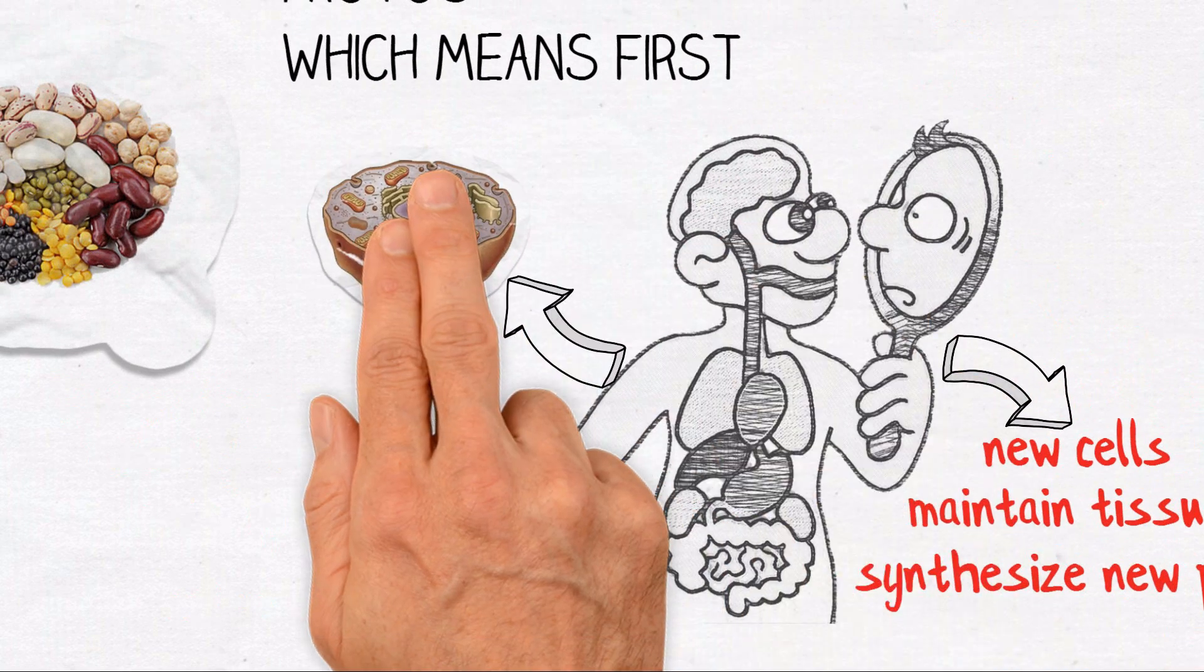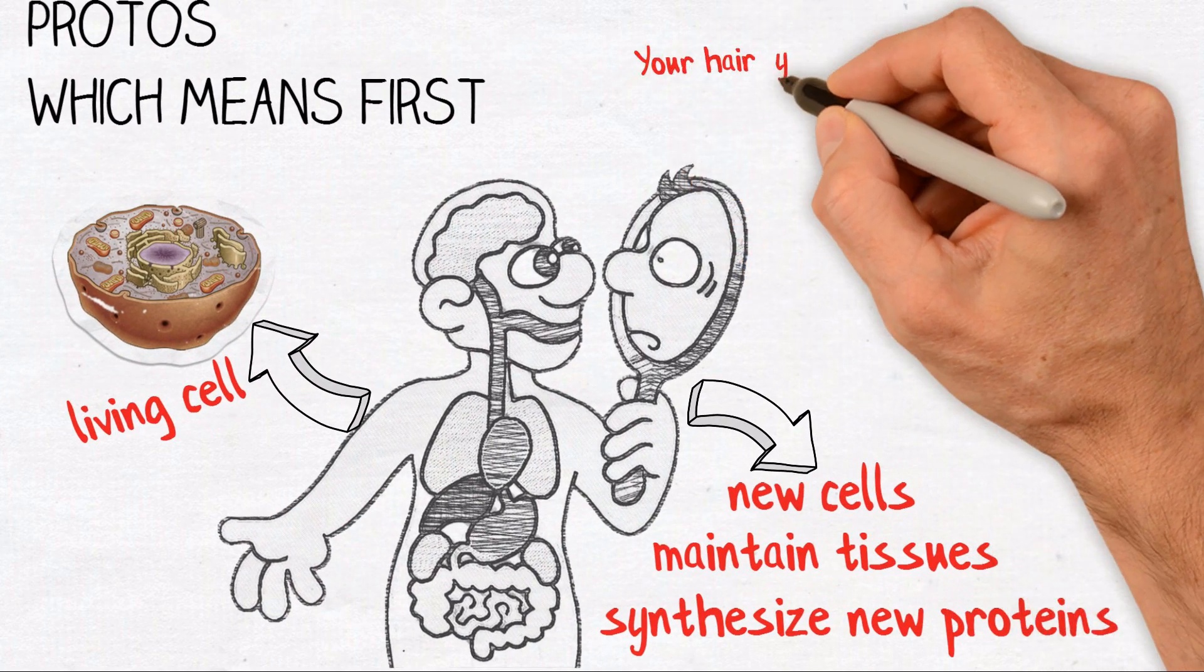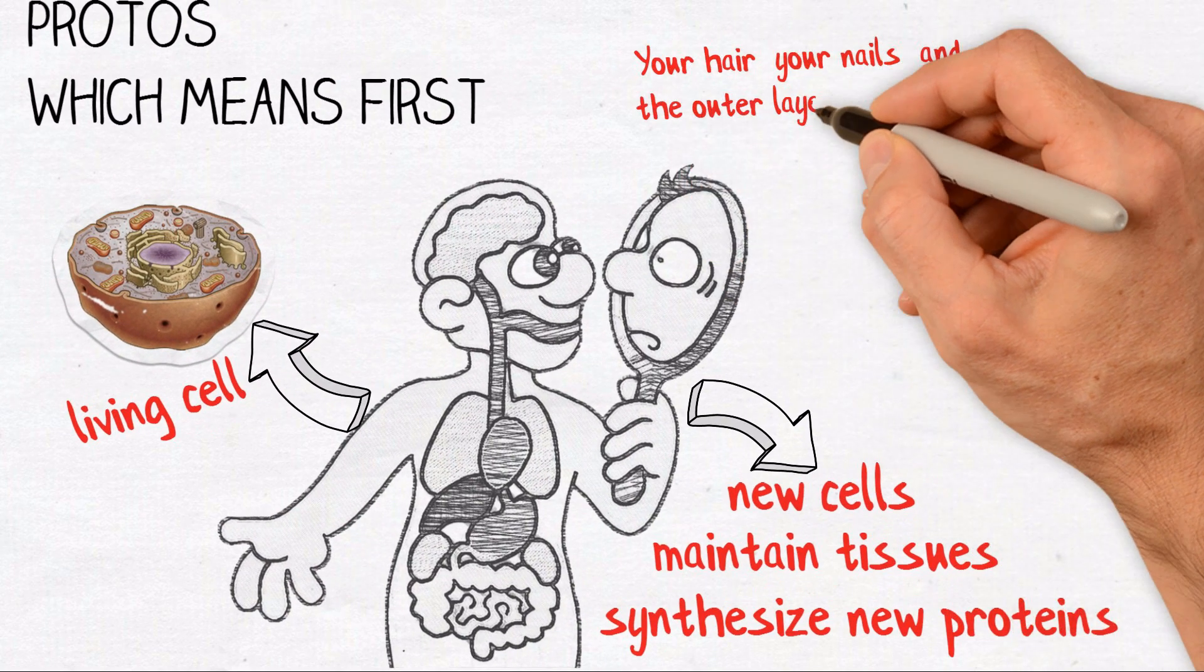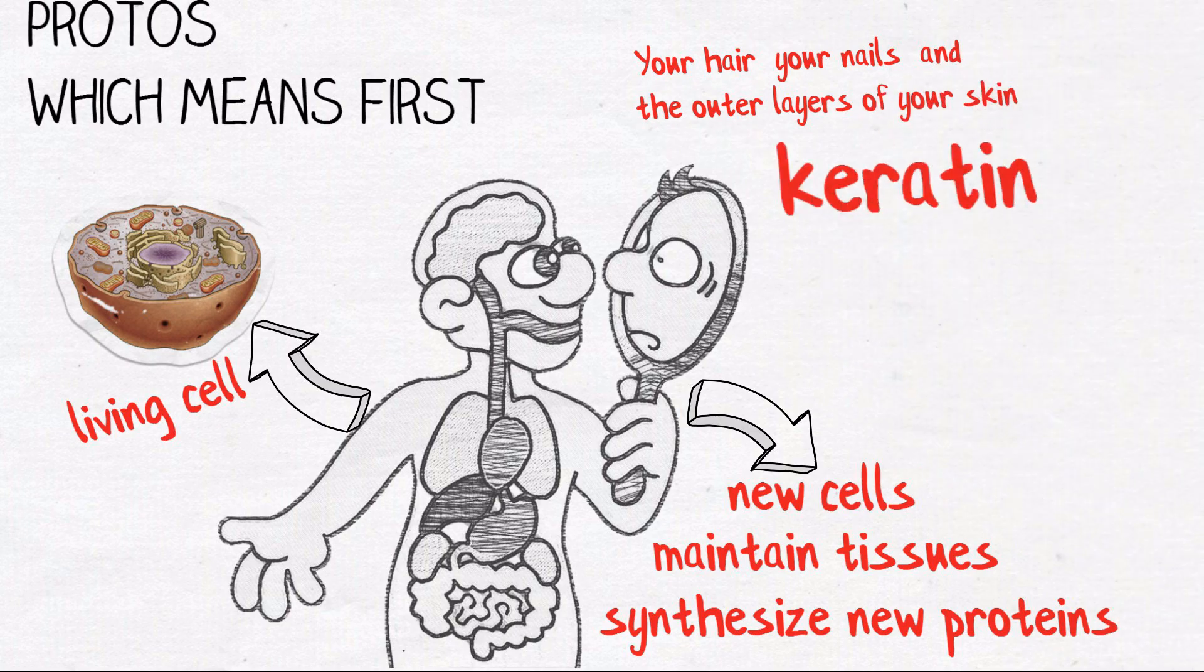Proteins are present in the outer and inner membranes of every living cell. Your hair, nails, and the outer layers of your skin are made of the protein keratin. Keratin is a scleroprotein, or a protein resistant to digestive enzymes. So if you bite your nails, you can't digest them.